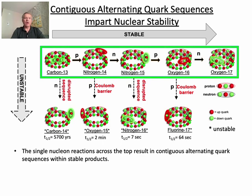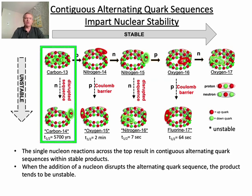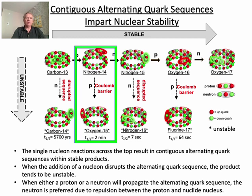Here are some more examples. Across the top, we see the series of stable nuclides, adding one nucleon at a time. If you look closely, you'll see that every nucleon that's added propagates the contiguous alternating quark sequence. In contrast, we see that the formation of carbon-14 actually disrupts the alternating quark sequence. There's a space there between the two nucleons on the top ring. The result is carbon-14, which is unstable and has a half-life of 5,700 years.